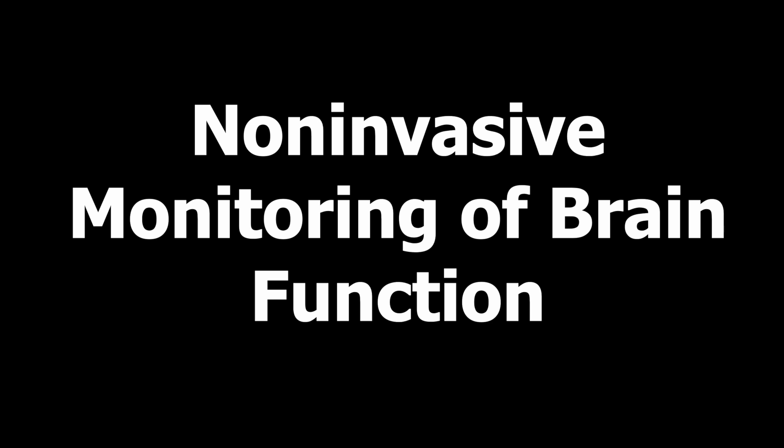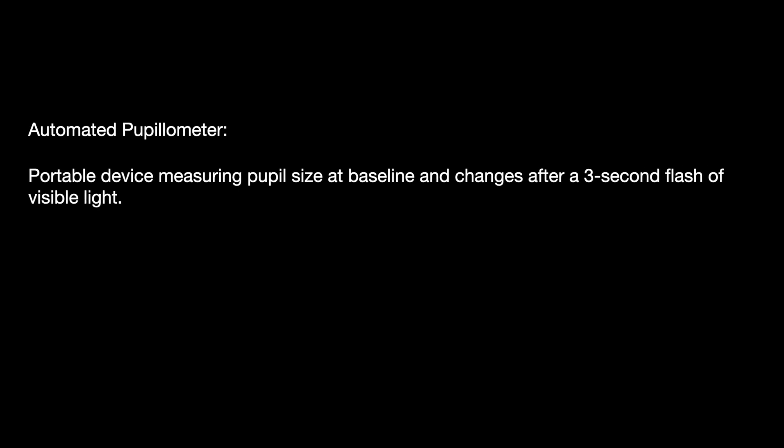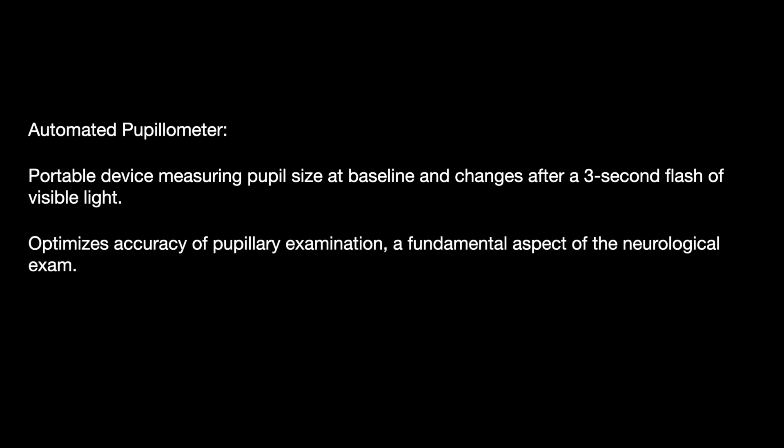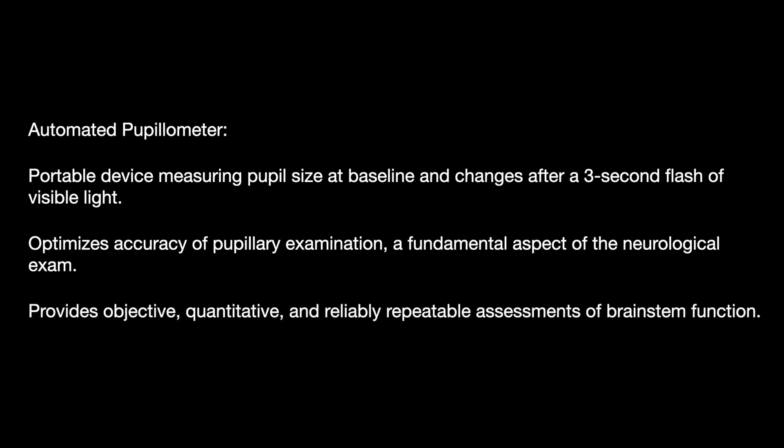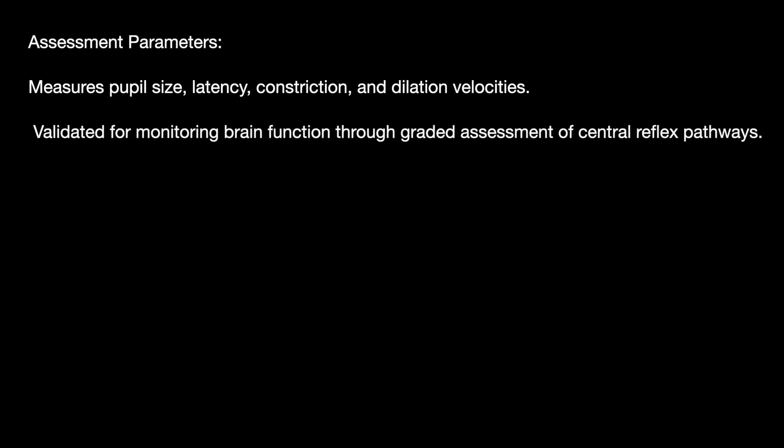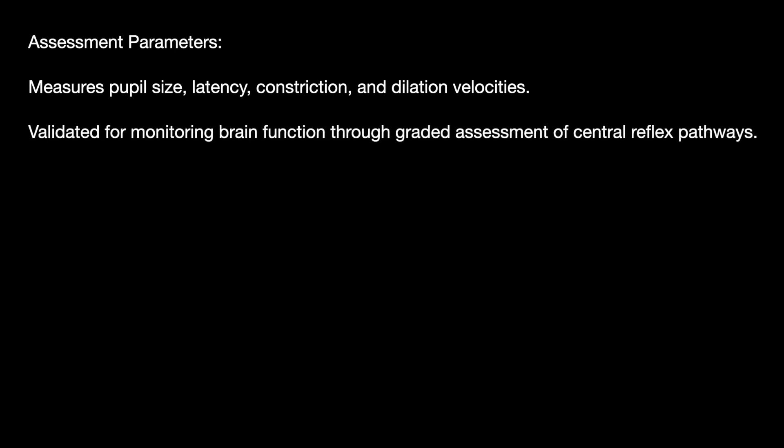The next monitor is brain function. We monitor the brain's function using automated pupillometers. It is a portable device which measures pupil size at baseline and changes after a three-second flash of visible light. It optimizes accuracy of pupillary examination, a fundamental aspect of the neurological exam, providing an objective, quantitative, and reliably repeatable assessment. The parameters measured include pupillary size, latency, and constriction and dilation velocities. It is validated for monitoring brain function through graded assessment of central reflex pathways.